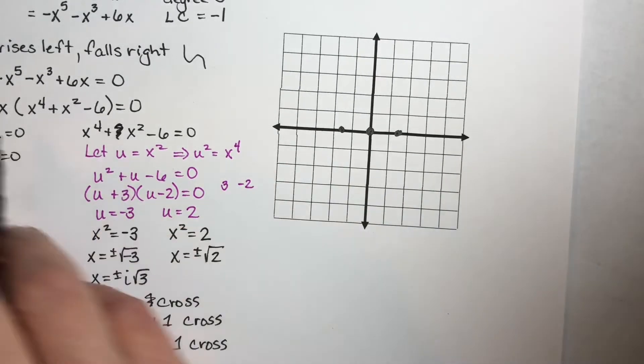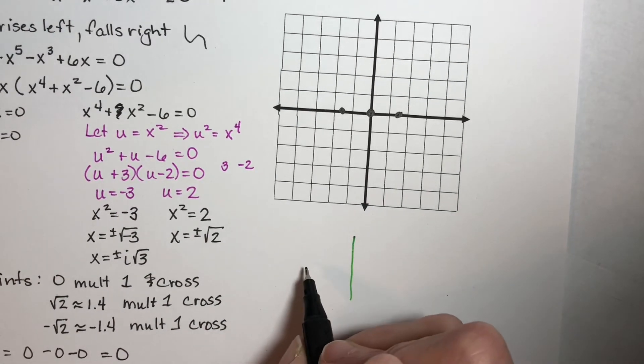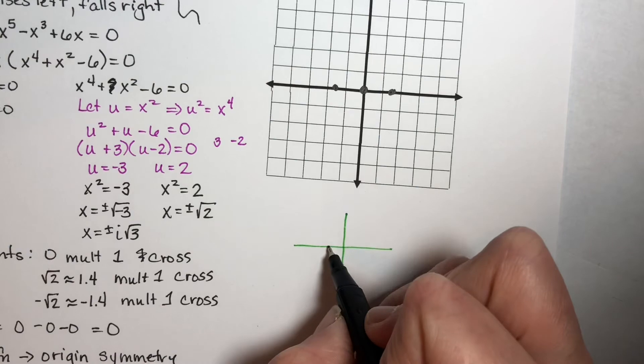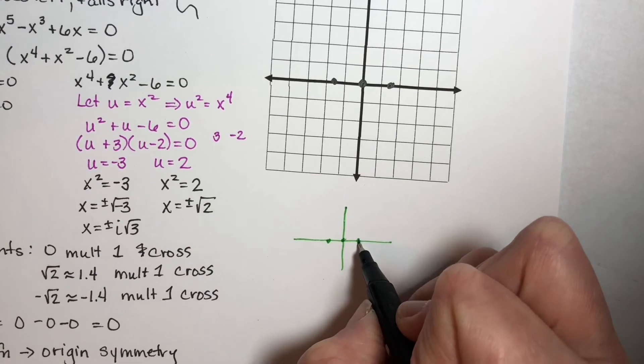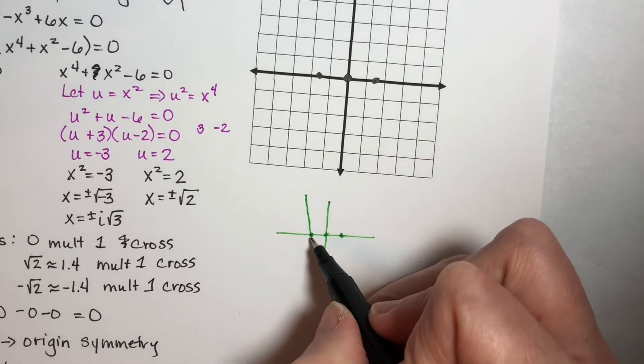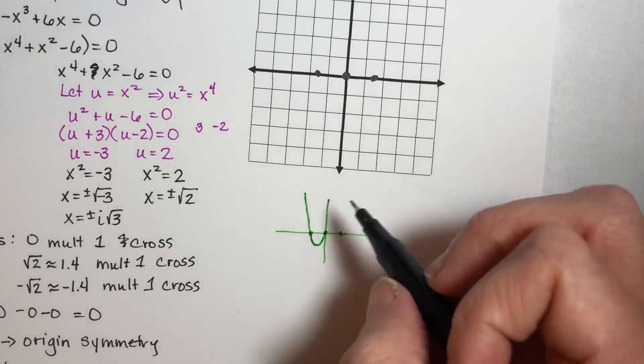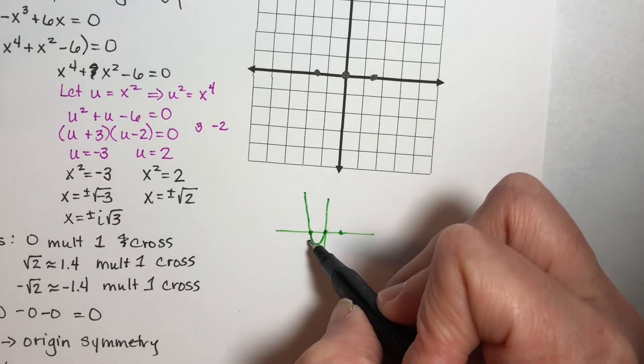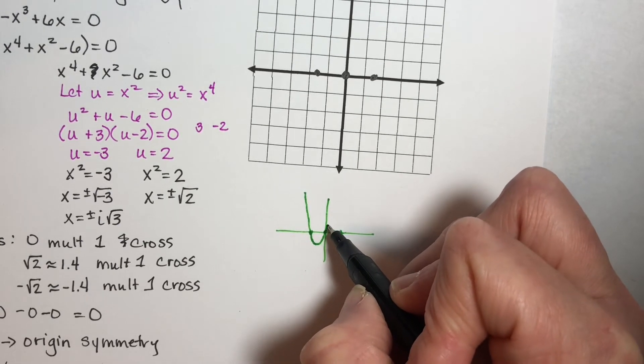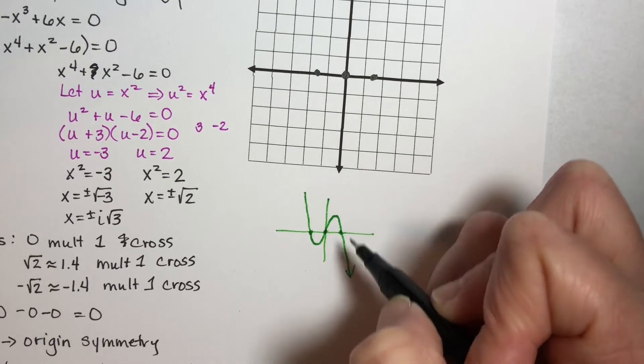So basically, my graph is going to look something like this. I'm going to come in like this. I know I have to cross at this x-intercept, and then I have to turn around and come back up here. And then I have symmetry, so however much I went down here, that's how much I go up here. And then I'm going to exit like this.